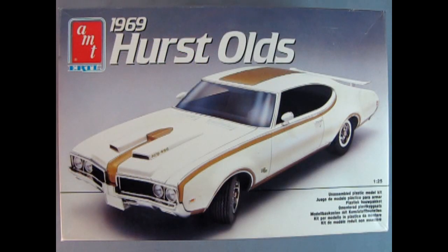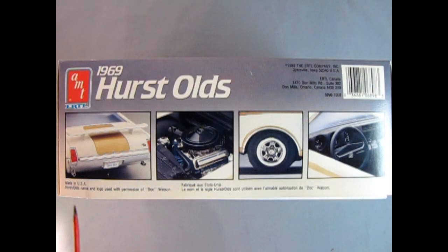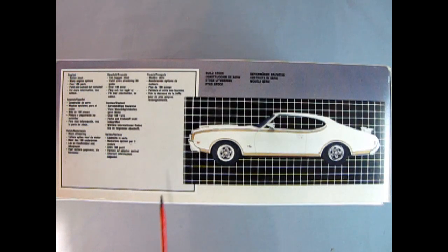The AMT Ertl 1969 Hurst Olds is a 125th scale unassembled plastic model kit. On this side of the box we can see different photographs of the Oldsmobile including the rear three-quarters shot, the engine, the wheels and tires, as well as the interior. And on this side we get a side profile of the car as well as a write-up which I'll include in the description below.